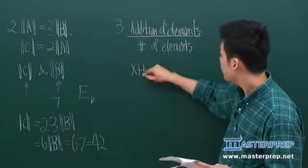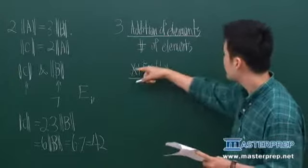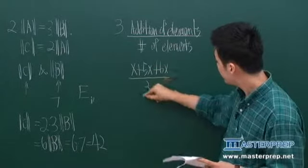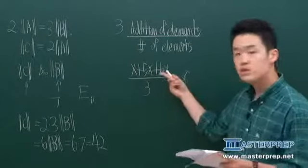So in this case, we are given with what? X plus 5X plus 6X over, we have three elements, over three is actually equal to eight. Now let's do some arithmetic, like literally.